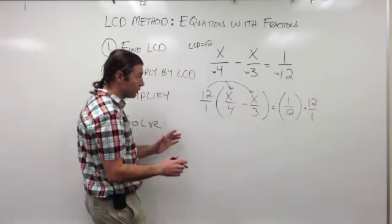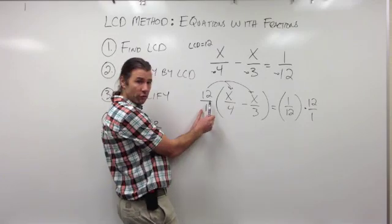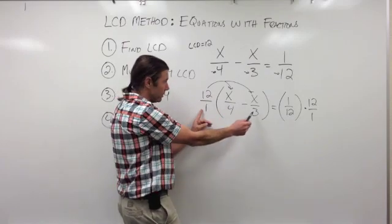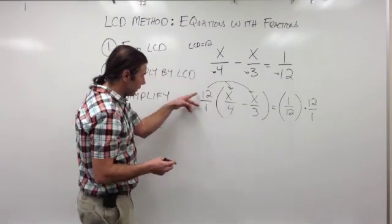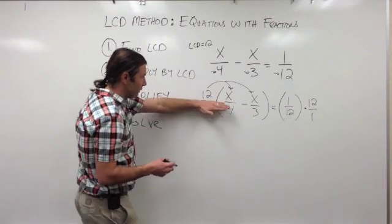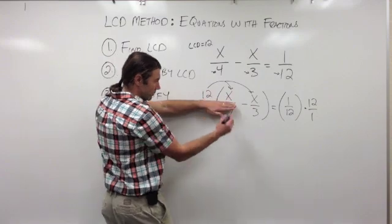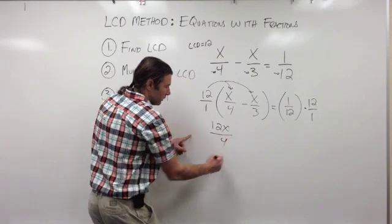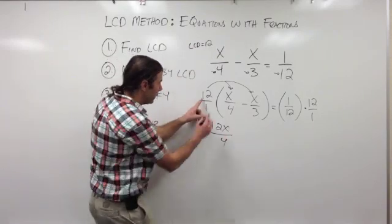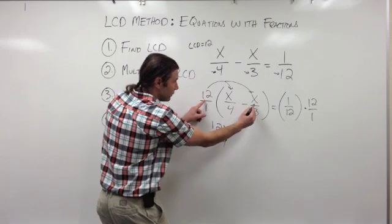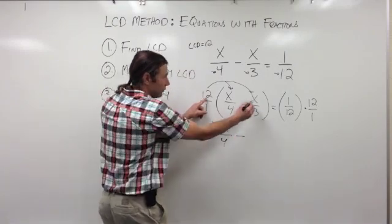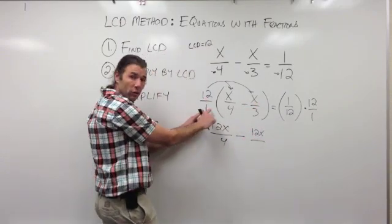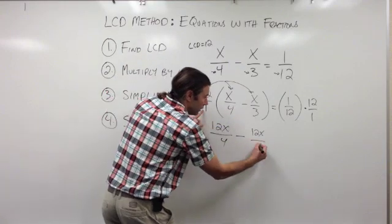Now let's see what happens. I've written 12 as a fraction, 12 over 1, because I'm multiplying it by fractions. When I take 12 over 1 times x over 4, I multiply the numerators: 12 times x is 12x. 1 times 4 is 4. Now I'll take 12 over 1 times the next term with a minus sign. 12 times x is 12x, and in the denominator, 1 times 3 is 3.